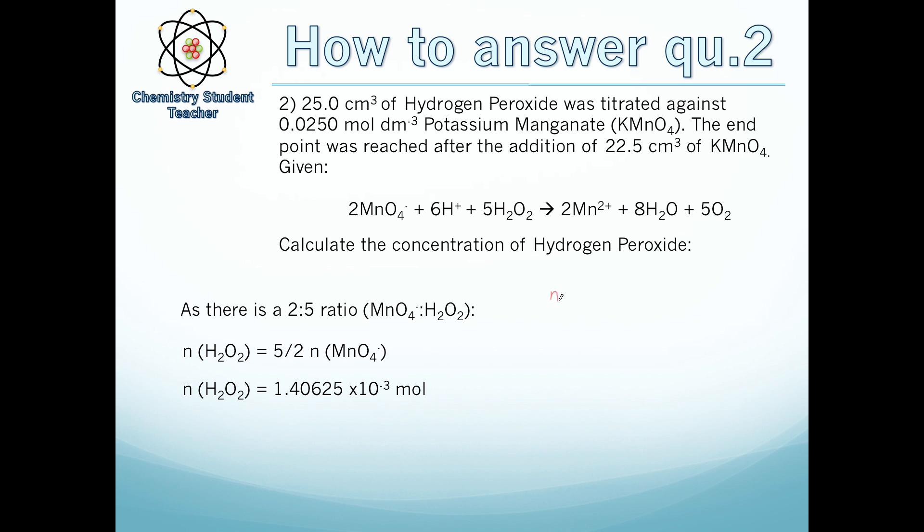We've now worked out how many moles of peroxide we have, so we can use the formula n = C × V / 1000 and simply rearrange for concentration. So we divide through by V/1000. Then you put the numbers in: 1.40625 × 10⁻³ all over volume, which is 25.0 over 1000. When we put that in the calculator we get a final concentration of 0.0563 mol dm⁻³. The question is very similar to before but with slightly different ratios.